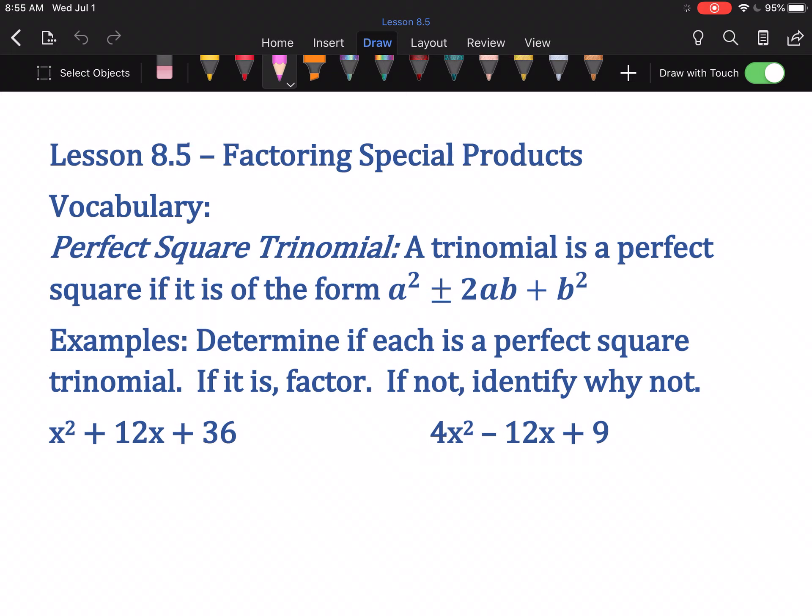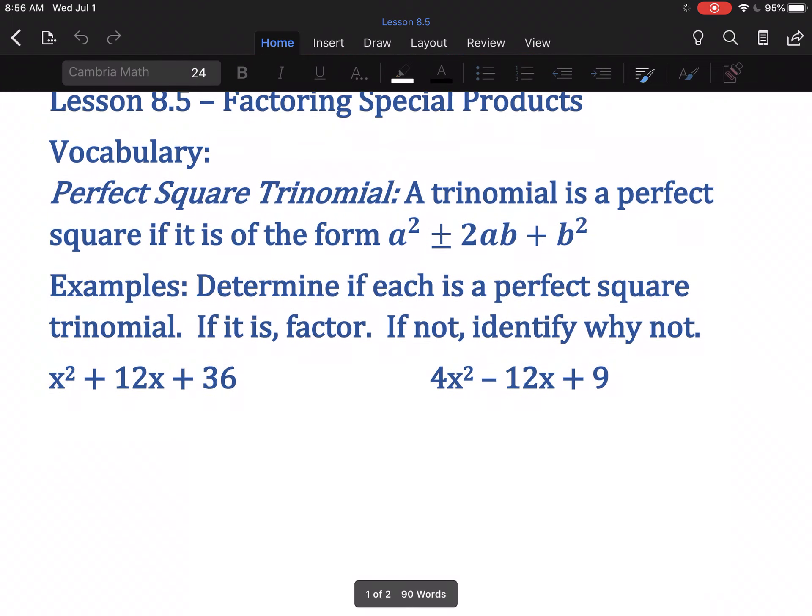A trinomial is a perfect square if it is of the form a² ± 2ab + b². What this boils down to in practice is the first term has to be a perfect square, the second term has to be a perfect square, and the middle term has to be 2 times the square roots of those perfect squares. Let me walk you through this.